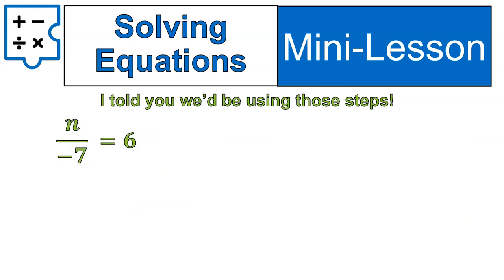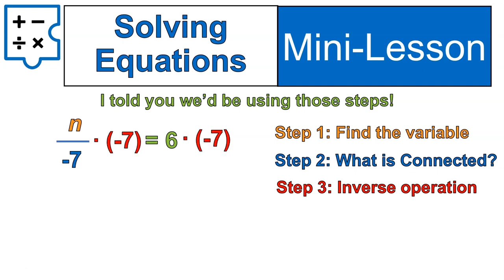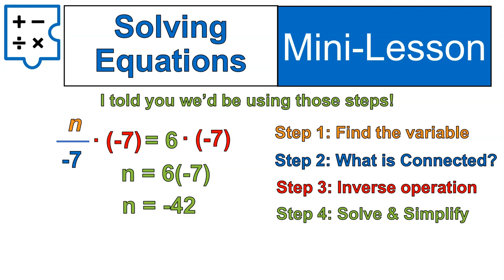Remember, I told you you would use these steps again. Step number one, find our variable. Step number two, what's it connected to? Divided by negative 7. So we're going to do the inverse of that to both sides of that equation. That means we're multiplying times negative 7 on the left equation and on the right. On the left side, we get rid of the divided by negative 7 times negative 7, and we're left with just n by itself. On the right side, 6 times negative 7, we solve that and get negative 42.